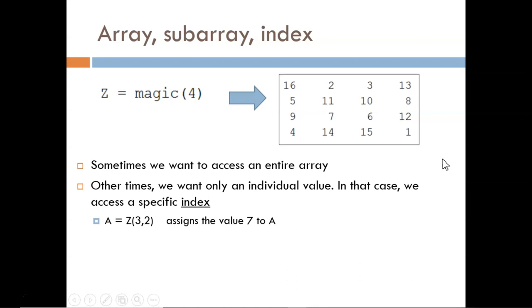Other times, we want to extract just one value or one index. As an example, Z(3,2) pulls out the 7 from Z. Why the 7? Because it is located at row 3, column 2.